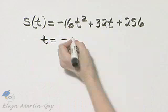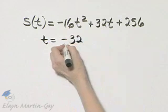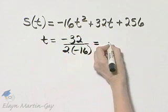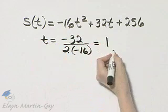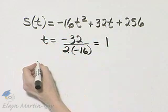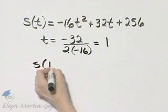So that's negative, B is 32, over 2 times A is negative 16, so the T value is 1. And then to find the corresponding S of T value, we find S of 1.